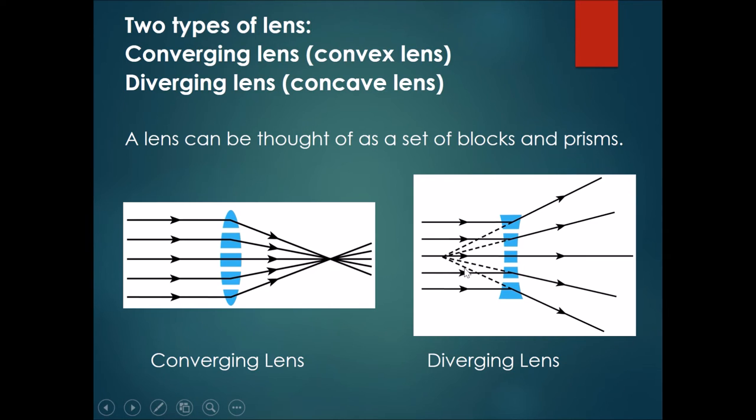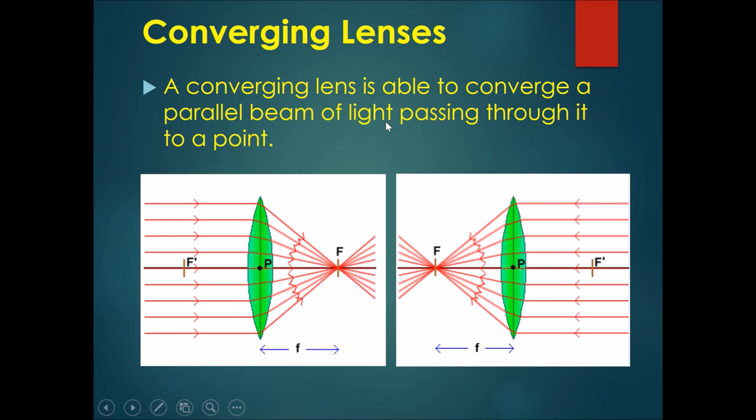The opposite thing happens with diverging lenses where they actually spread out the rays. The syllabus mainly teaches us about converging lenses. A converging lens is able to converge a parallel beam of light passing through it to a point.